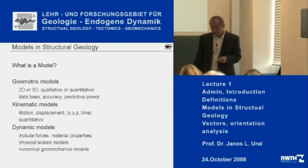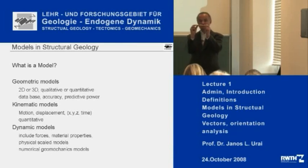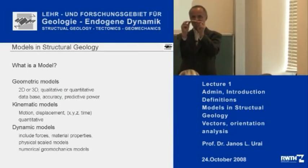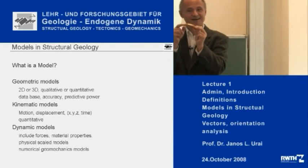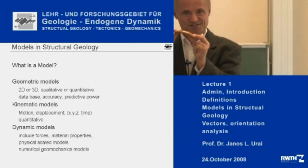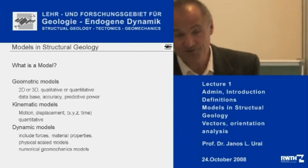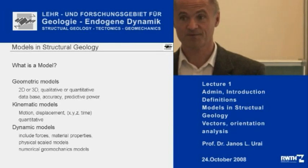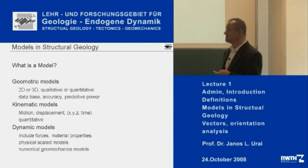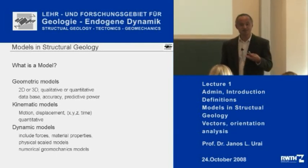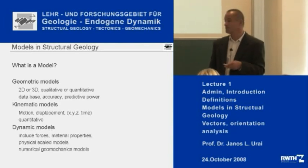Dynamic models are models where you don't just describe the change in shape, but at every point you specify the forces and the material properties. Dynamic models are much, much more complete — therefore they are much, much more difficult to make. They are not as detailed as one would like, but they are very strongly in development at the moment.